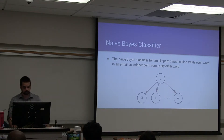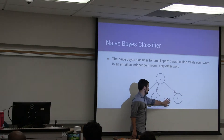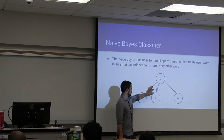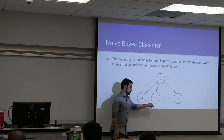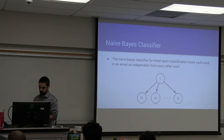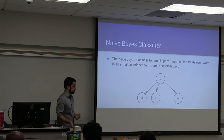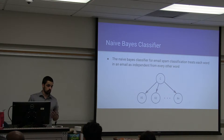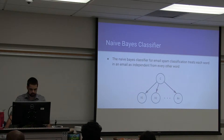The Naive Bayes classifier for email spam classification treats each word in an email as independent from every other. We can think of each of these nodes as words, and the top node is the spam status. There's no directed path from word variable to word variable. But we know as humans that words mixed together can have different connotations — for example, the difference between 'very good' and 'not good.' Our Naive Bayes classifier wouldn't really be able to distinguish that, but Naive Bayes classifiers are still widely used in text categorization and are extremely robust and highly scalable.